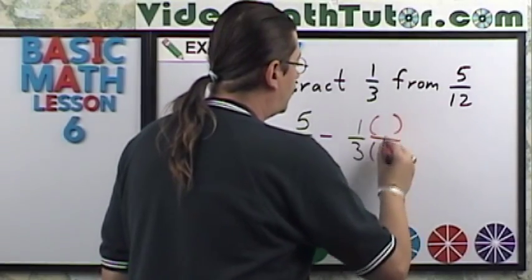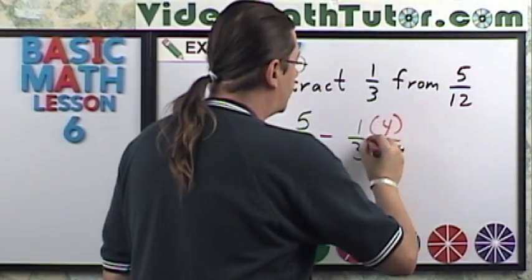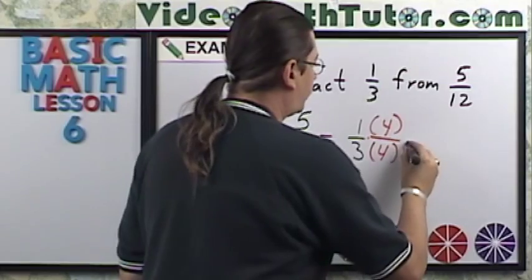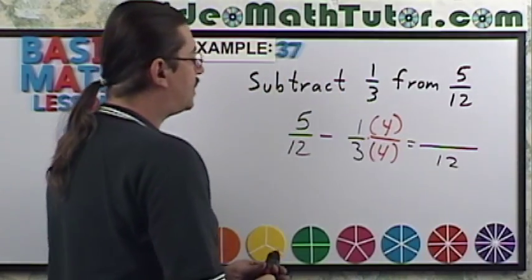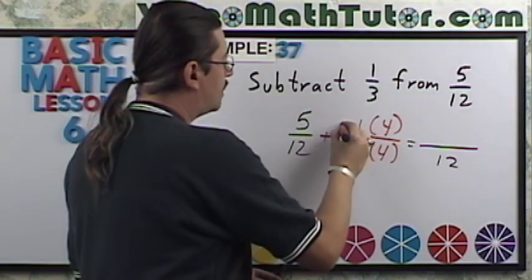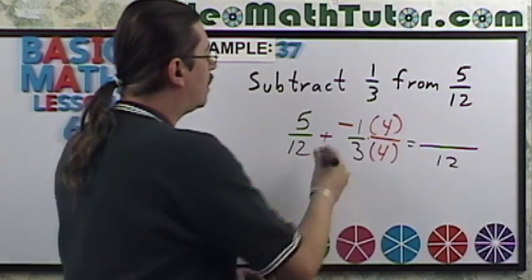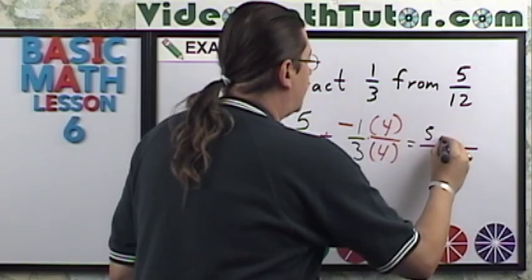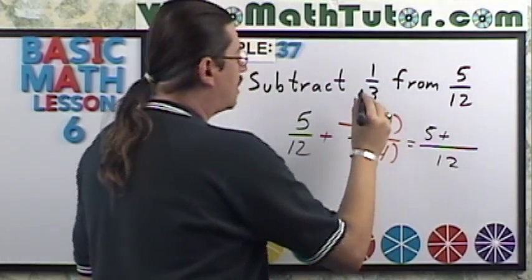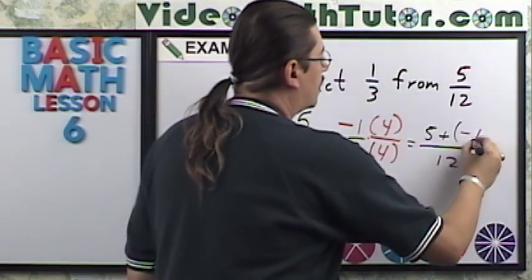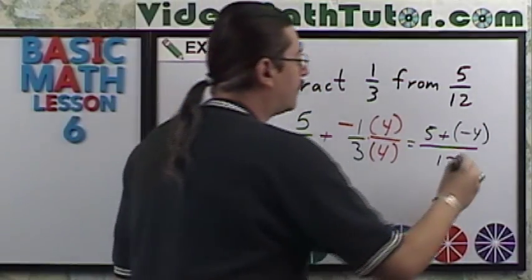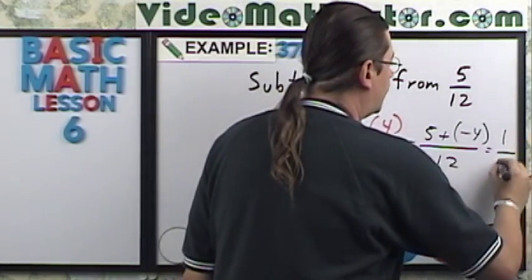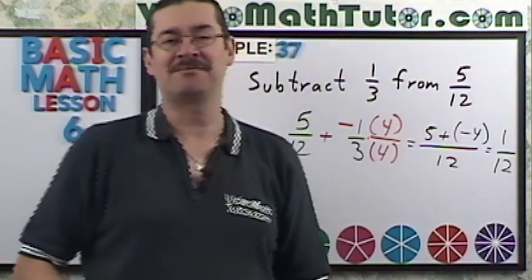So I'm going to multiply top and bottom by 4 so my common denominator is 12, and let's add the opposite. So I'm going to have 5 plus negative 1 times 4 is negative 4. And if you want to just go 5 minus 4 is 1, that's fine too. So we're going to get 1/12, and that's our answer.